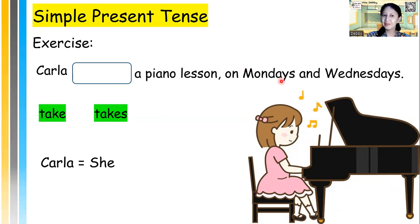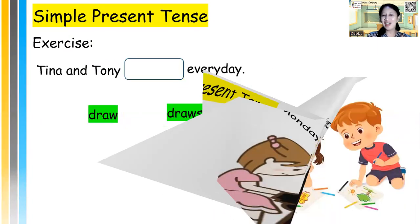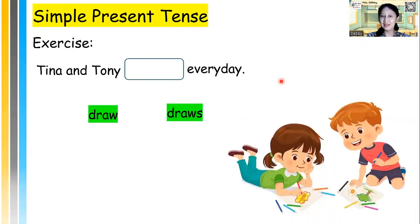Now what about this one? I think this will be the last one for today with simple present tense. Tina and Tony, so the two of them, Tina and Tony means they. So when the subject is they or Tina and Tony, draw or draws every day. Draw. Excellent.